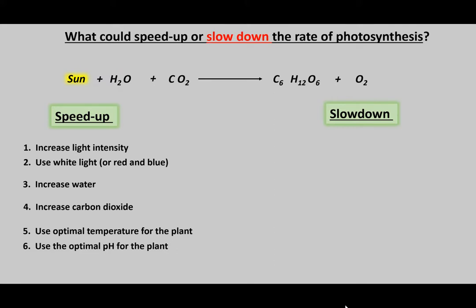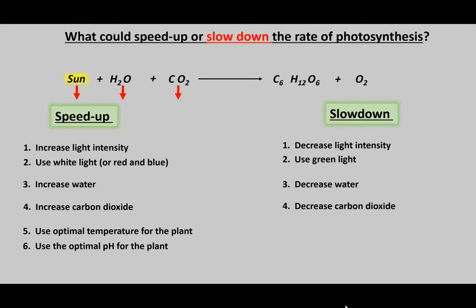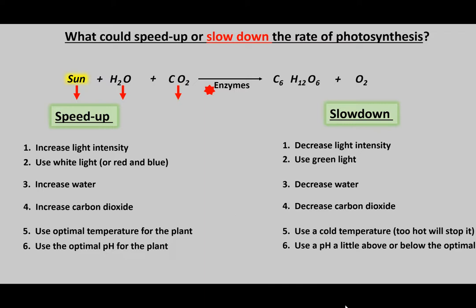To slow down photosynthesis, decrease the inputs: decrease light intensity and use green light, which is reflected and least effective. Decrease water and decrease CO2. For the enzymes: decrease temperature to slow them down without stopping the process. If you raise the temperature too much, enzymes will break down — denature — and won't work again. Going too far from the optimal pH will also cause enzymes to denature.